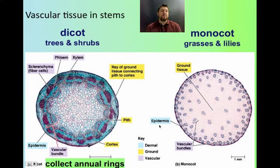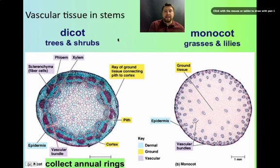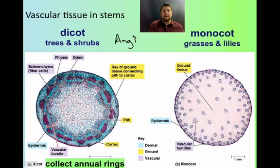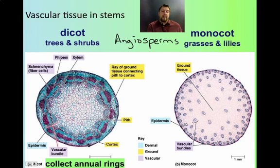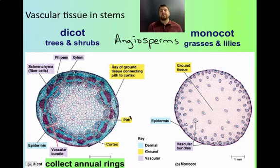There's a pretty big difference between the stems of a monocot and a dicot. Both monocots and dicots are part of the class called angiosperms, the flowering plants. Dicots have their vascular tissue — their xylem and phloem — arranged in a neat ring around the outside, with the larger xylem cells towards the inside and the phloem cells in the outer layer that we often refer to as bark in a tree. Monocots, on the other hand, have their xylem and phloem scattered throughout the stem.